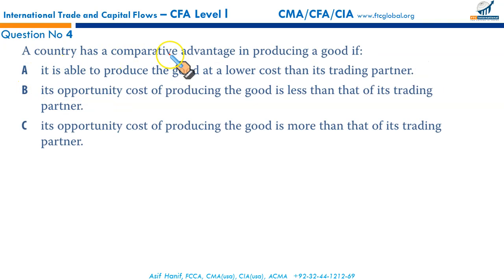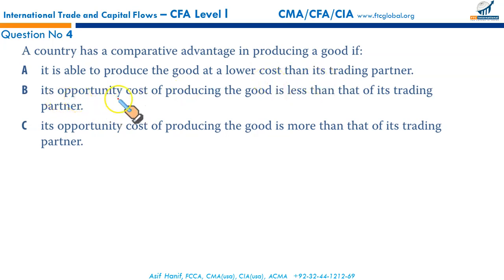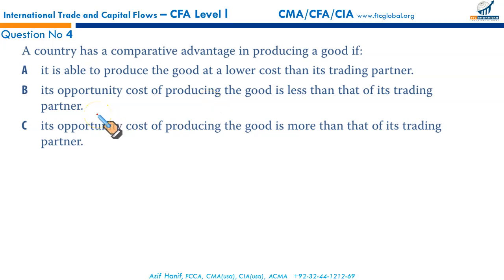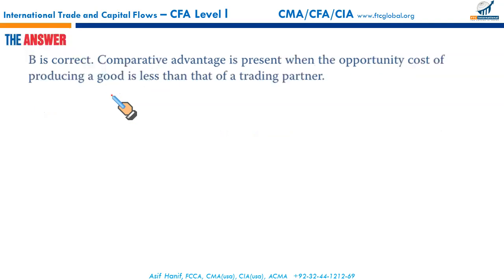Question four: a country has a comparative advantage in producing a good if it is able to produce the good at lower cost than its trading partner. The correct description is that a country has a comparative advantage if its opportunity cost of producing the good is less than that of its trading partner. Comparative advantage is present when the opportunity cost is less than that of the trading partner — that makes B the correct option.